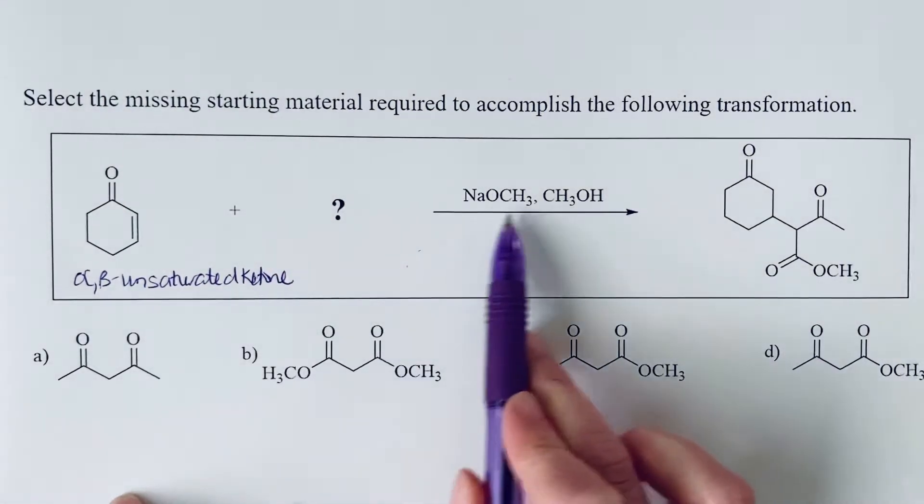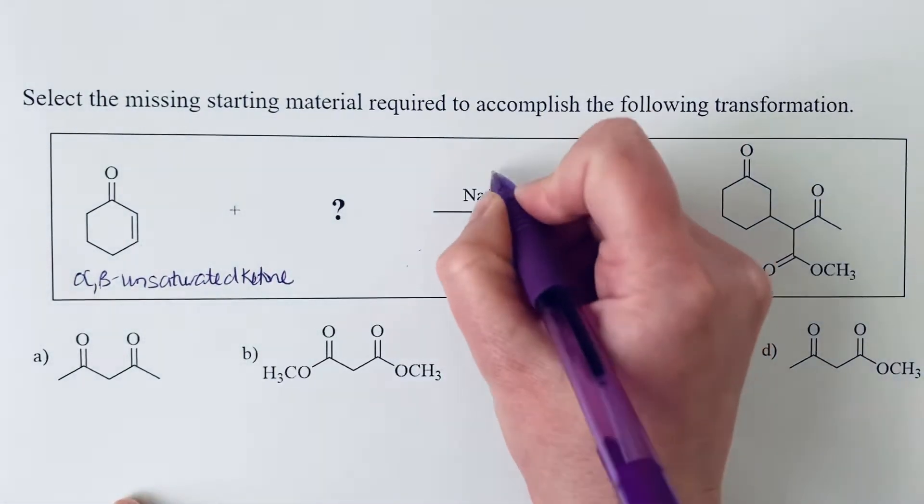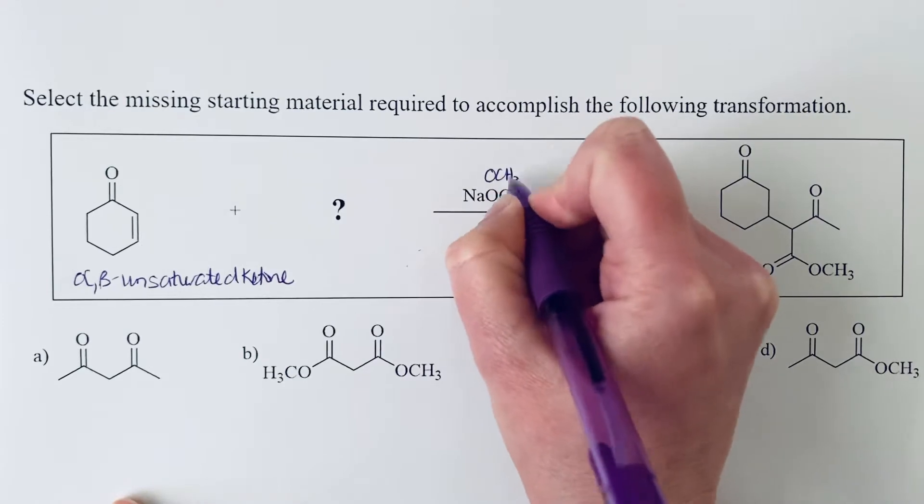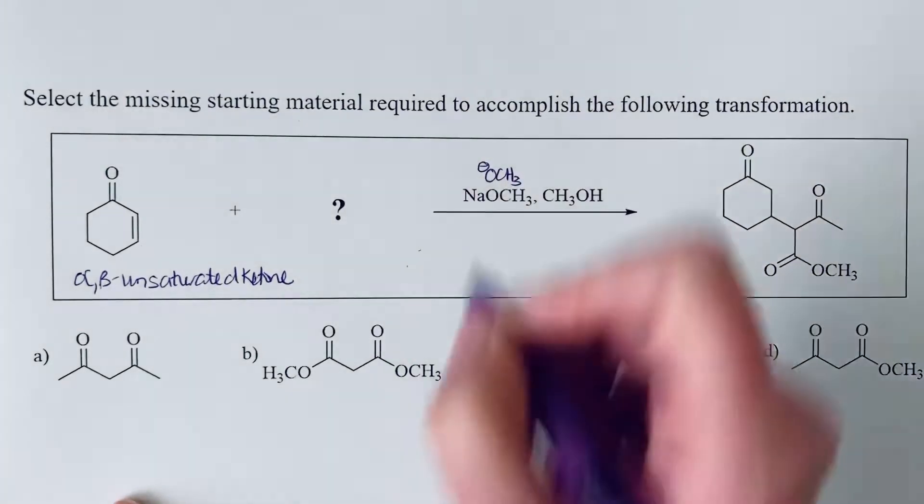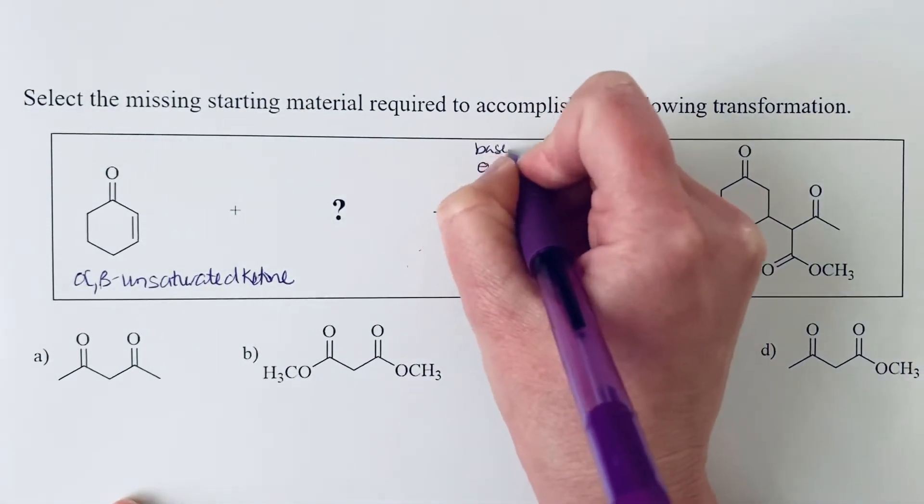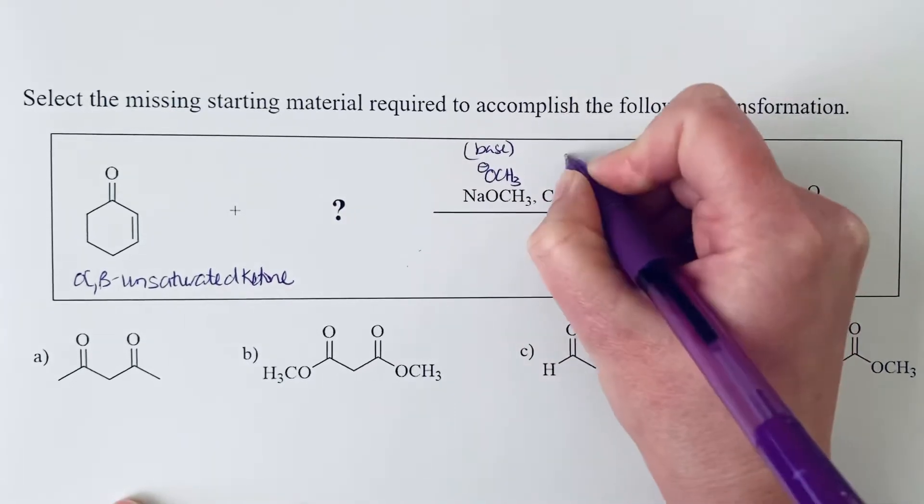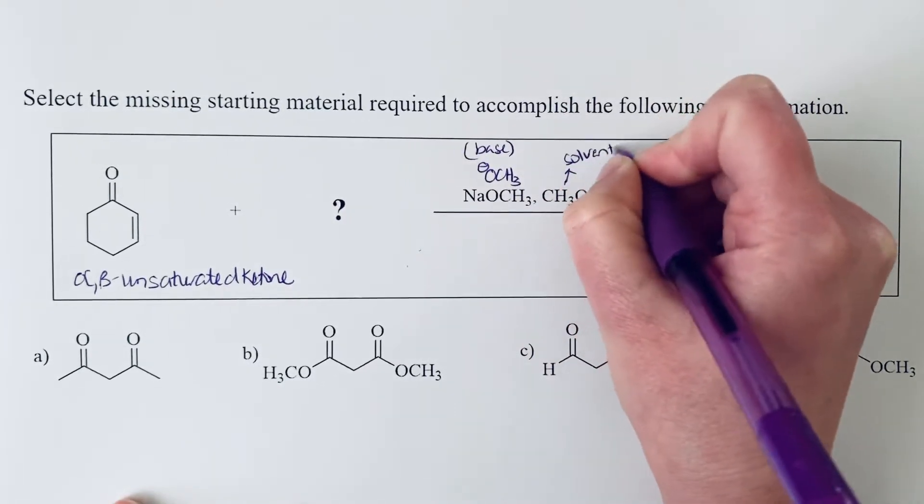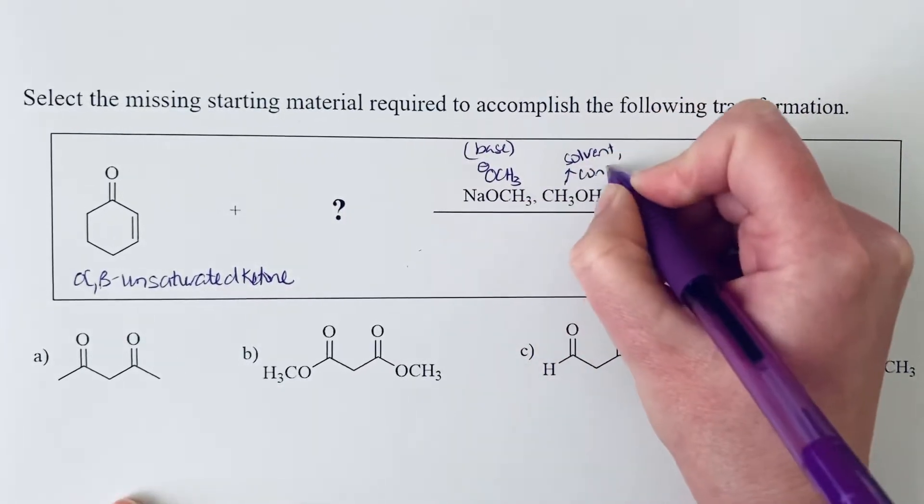And we appear to have a base. So we have methoxide as a base, and we have methanol as the solvent and the conjugate acid of that base.